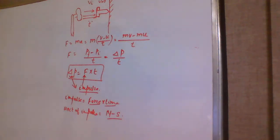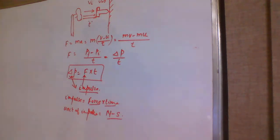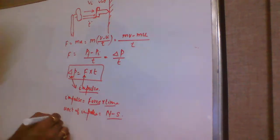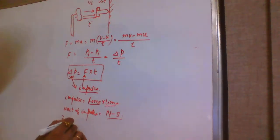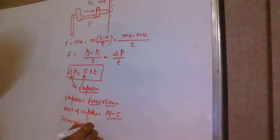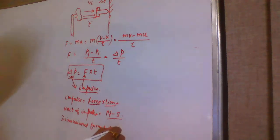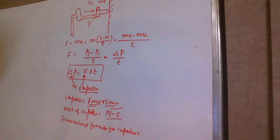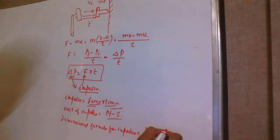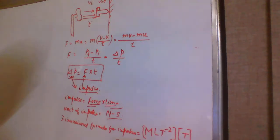When a large force is applied for a very short period of time, the product of force and time is called impulse. So impulse = force × time. The unit of impulse is Newton·second (N·s). The dimensional formula for impulse is the dimensional formula of force × dimensional formula of time: M·L·T⁻² × T = M·L·T⁻¹.